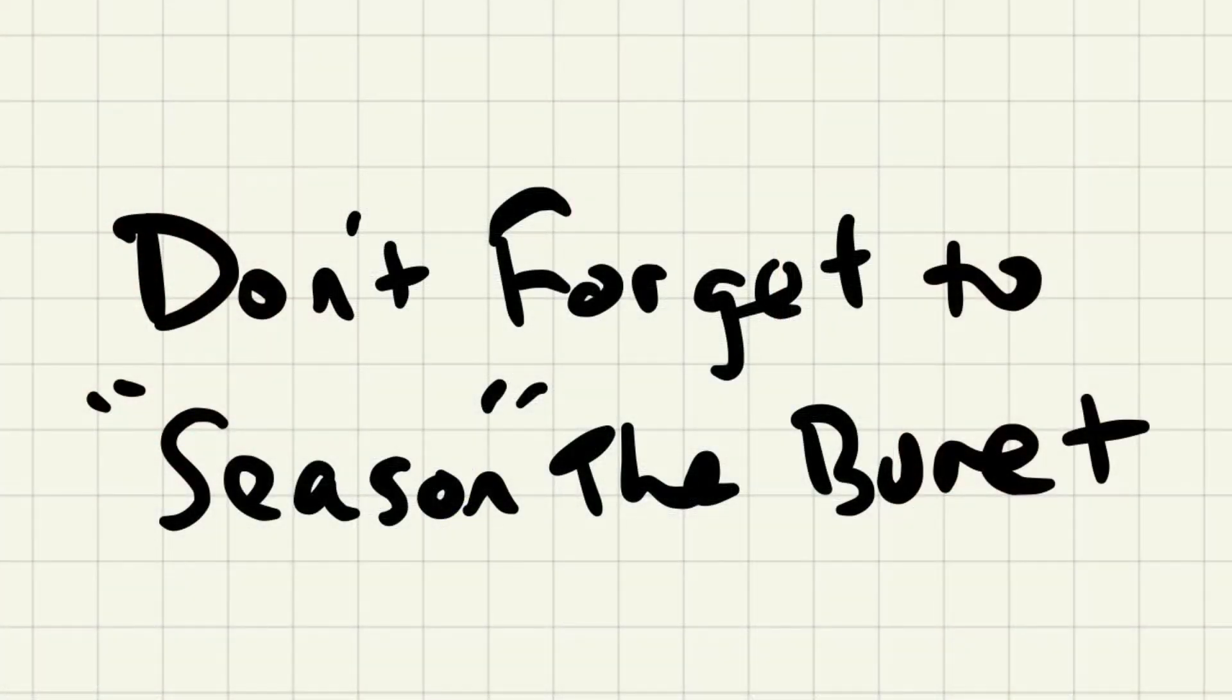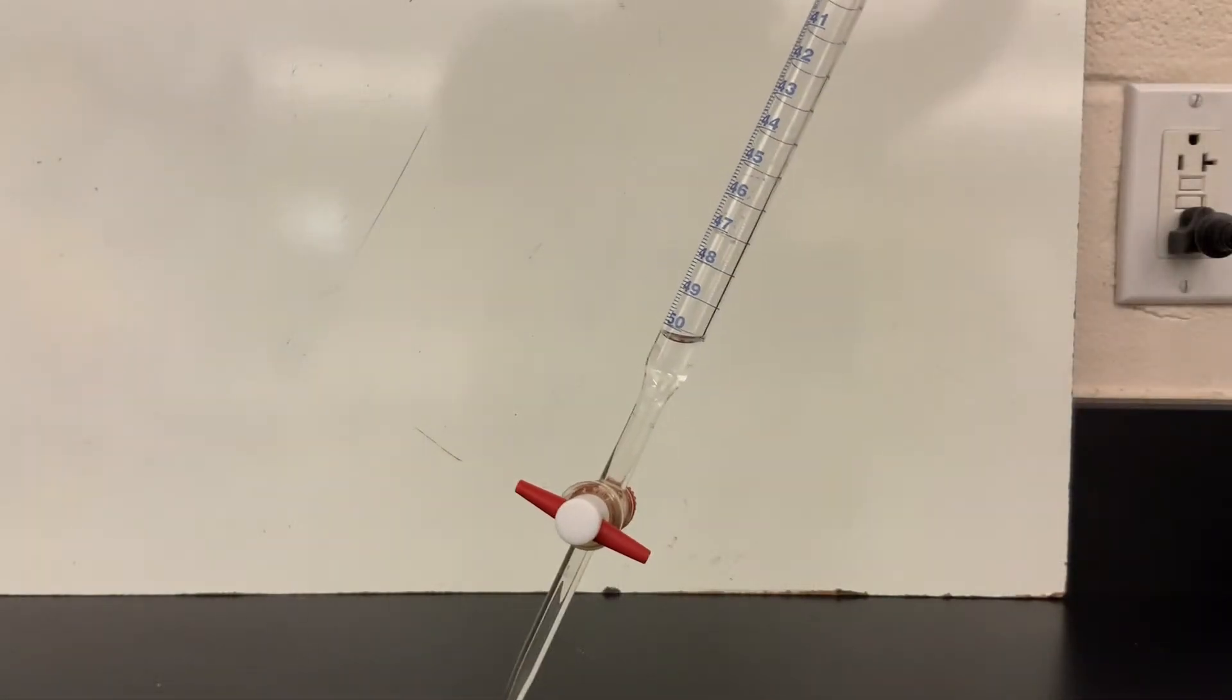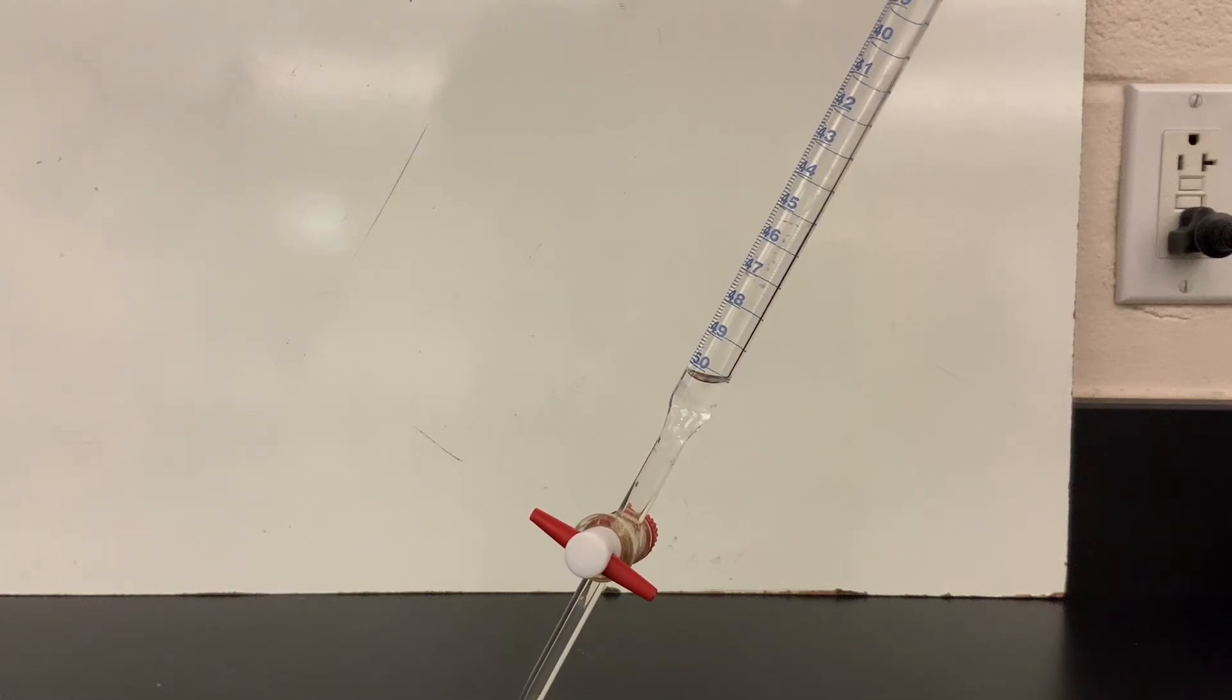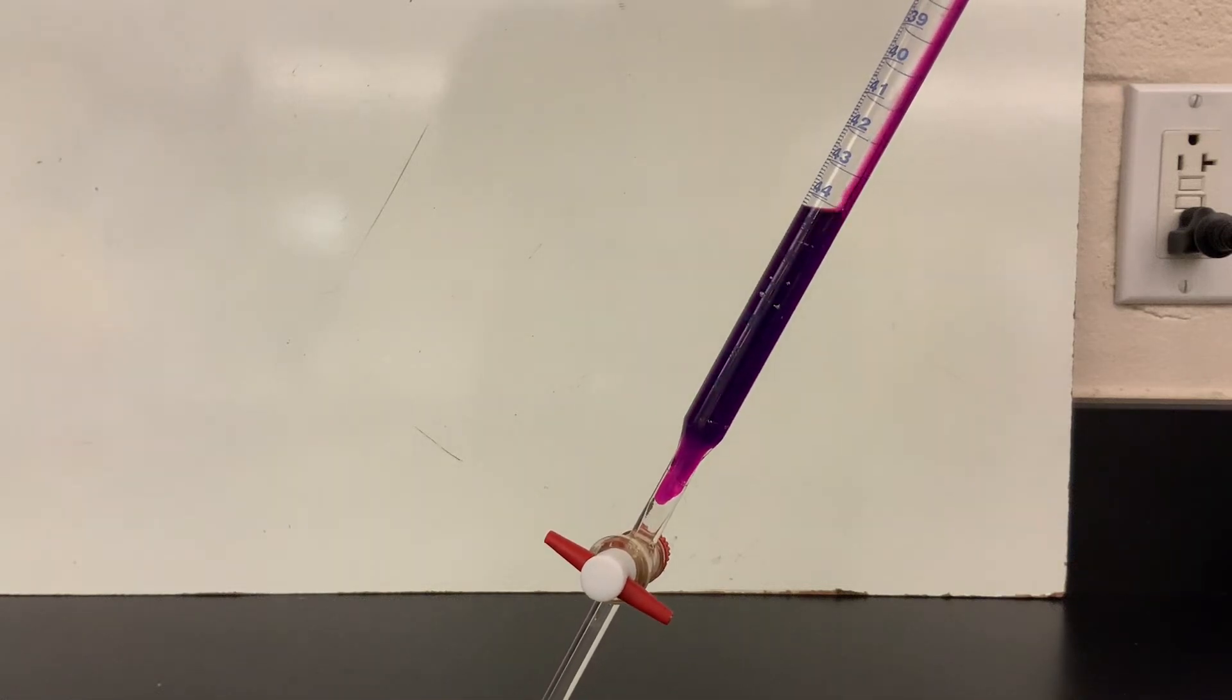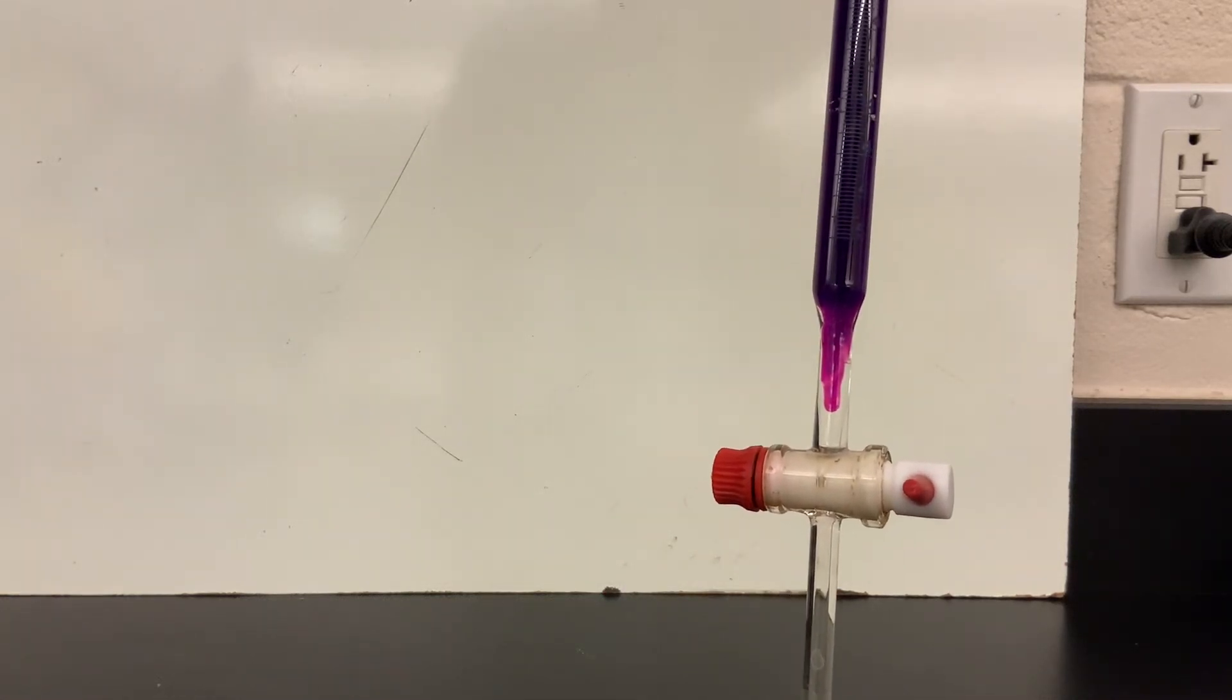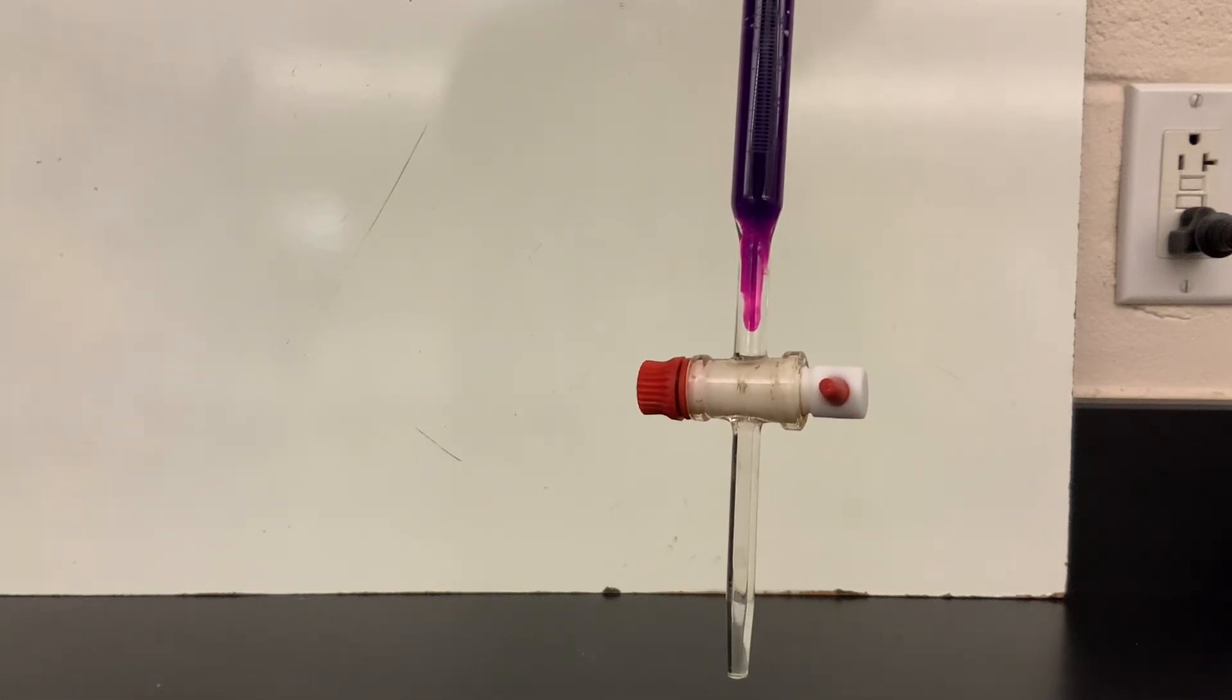It's important to season the burette as if any water was left in the bottom of the burette from cleaning and the permanganate was added on top of that water. You may miss it but certainly that permanganate in the start of the burette would be diluted and affect the amount of permanganate that you ended up using.